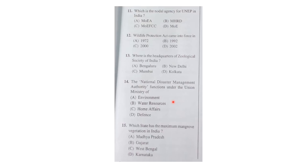The fourth question from the environment section was: the National Disaster Management Authority functions under which Union Ministry? Whenever a flood or any other tragedy happens, people blame the Home Ministry, because it is the Ministry of Home Affairs that manages such matters. So the correct answer is C — Ministry of Home Affairs.